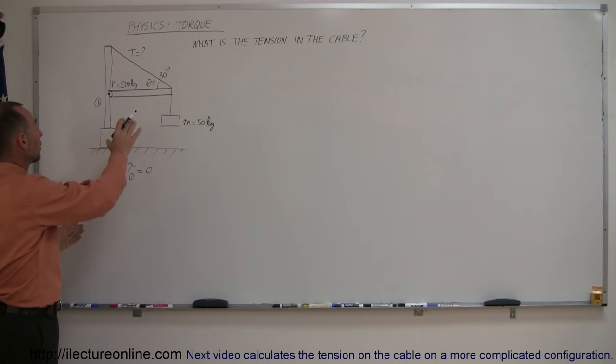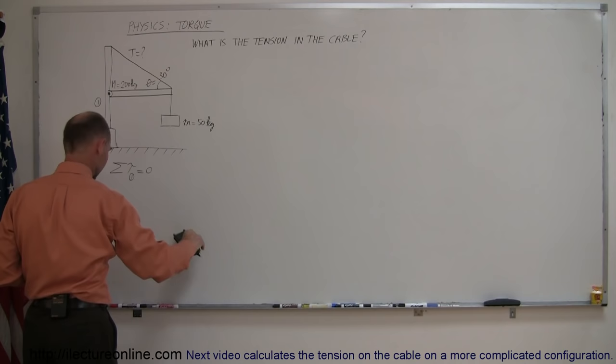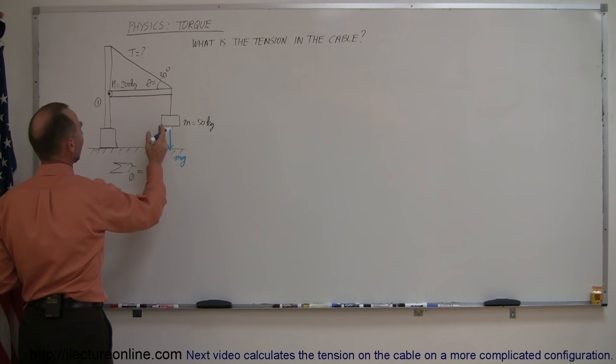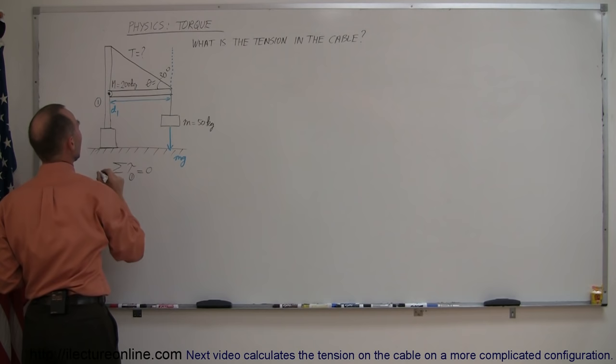Using a different color pen, I can identify the forces. We have mg — the weight of the hanging object — going downward, and the perpendicular distance from the line of action of this force to the pivot point can be considered d1. So d1 is the distance from the line of action of this force to the pivot point.